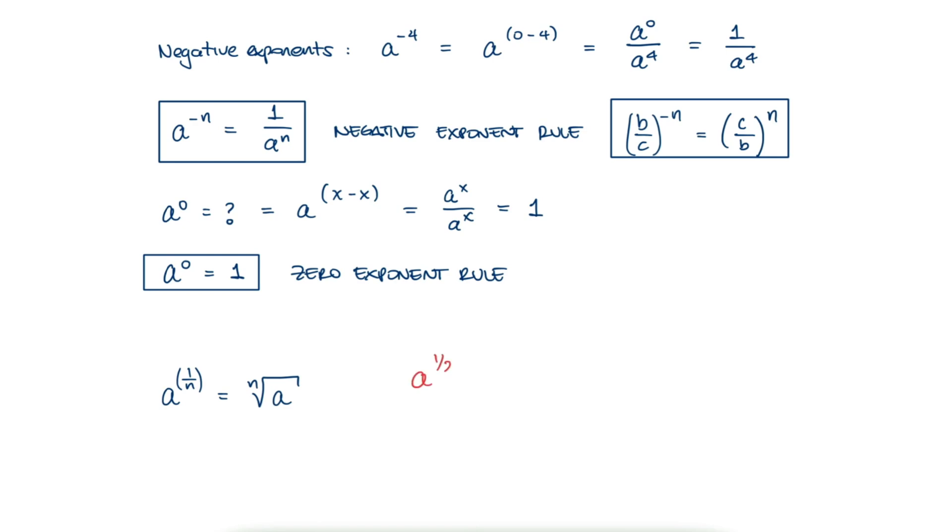For example, one half is the square root, one third is the cubic root, and any fraction that does not have a one in the numerator becomes the exponent inside the root. For example, four over five as the exponent would be the fifth root of the number to the fourth. Therefore,